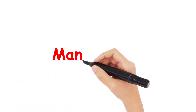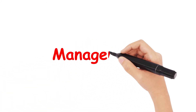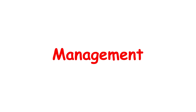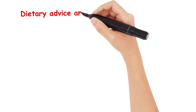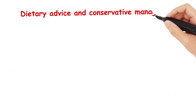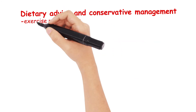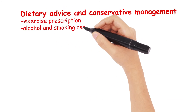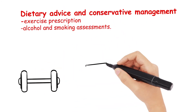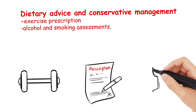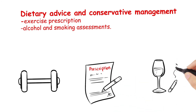The main stay of diabetes management — and what you really need to know for your exams — starts with dietary advice and conservative management, including exercise prescription, alcohol and smoking assessments. Additionally, diabetic patients should get their annual flu jab, as well as annual diabetic assessments and retinal screening.